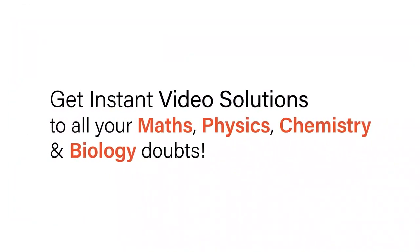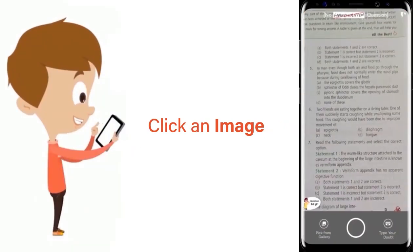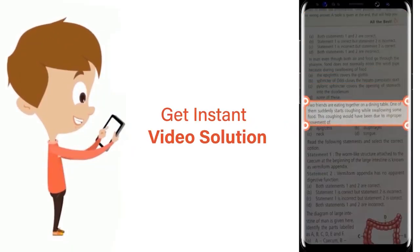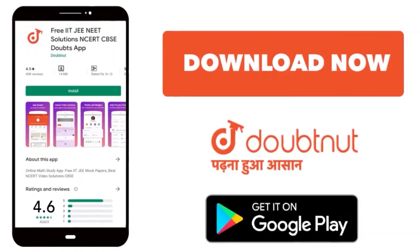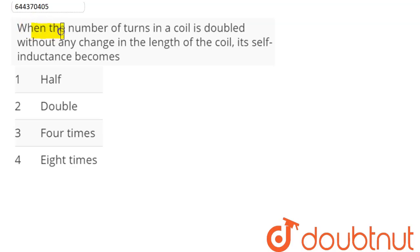With Doubtnet, get instant video solutions to all your maths, physics, chemistry, and biology doubts. Just click the image of the question, crop the question, and get instant video solution. Download Doubtnet app today. Question is: when the number of turns in a coil is doubled without any change in the length of the coil, its self-inductance becomes...